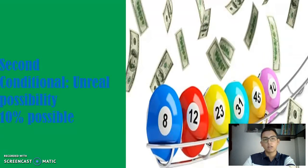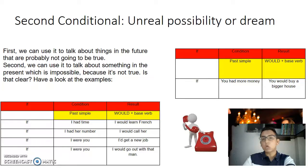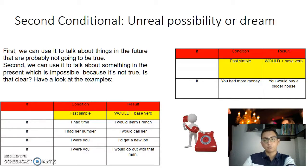Second conditional: unreal possibility, 10% possible — an unreal possibility or dream. First, we can use it to talk about things in the future that are probably not going to be true. It is necessary to use past simple tense in the condition, and in the result will plus the base verb.